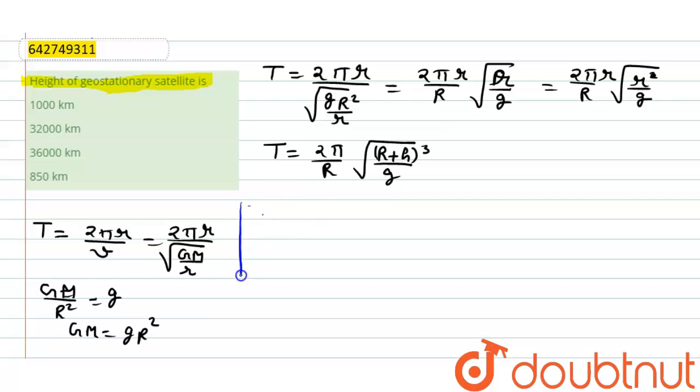We will get time period of a satellite is 84.6 minute into 60, it will come in second. 2 pi divided by r, that is 6400 into root of 6400 plus h that we have to find out, divided by 10.